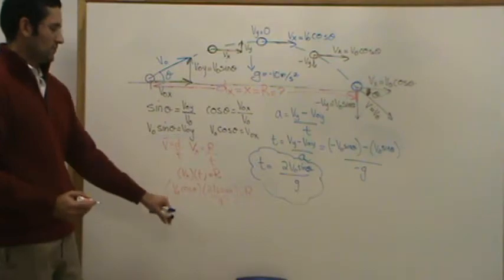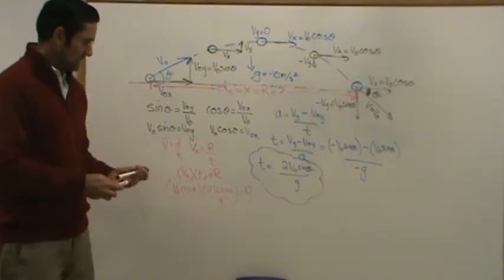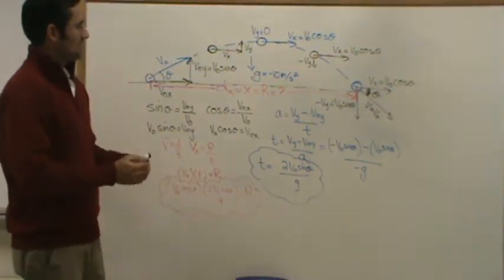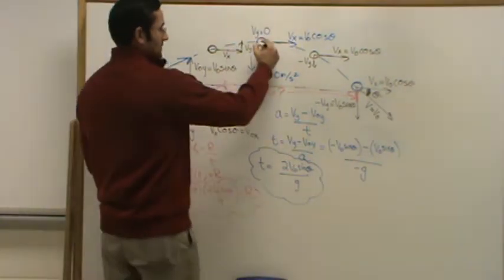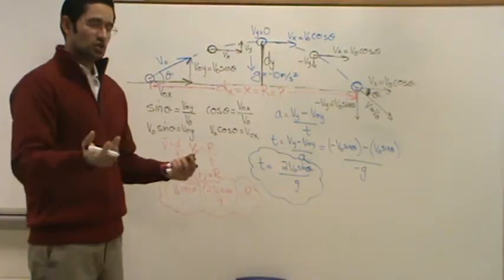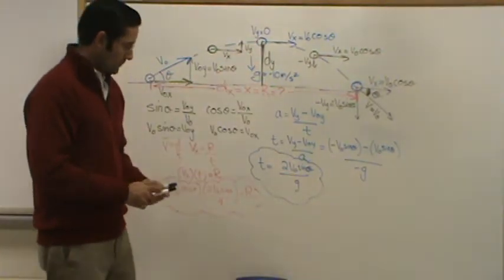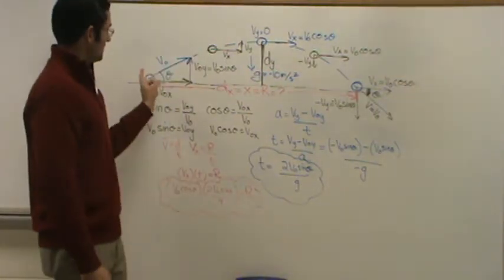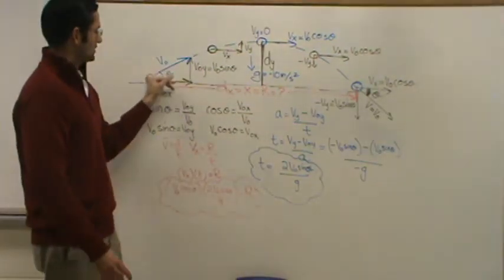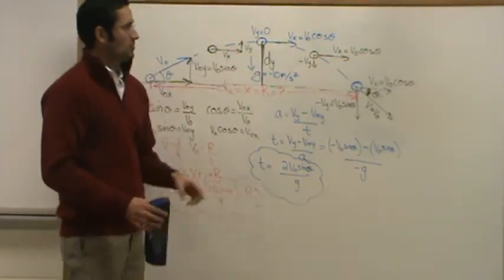That gives you your range — how far the ball travels sideways. Finally, your teacher may ask you to find the height — how high the ball went, called dy, h, or y. To find the height, you compare the start point to the highest point. The ball has an initial vertical velocity of V naught sine theta and a final velocity of zero at the top. You use the equation: final velocity squared equals initial velocity squared plus 2 times a times d.